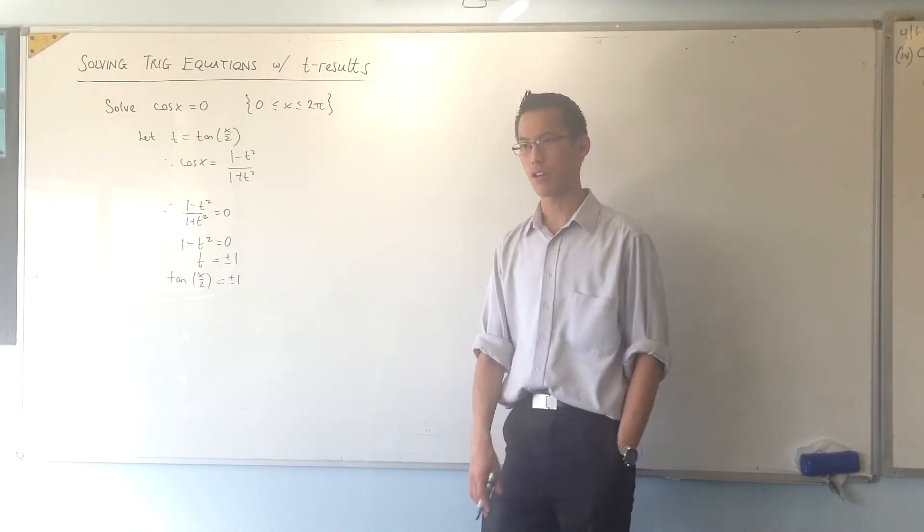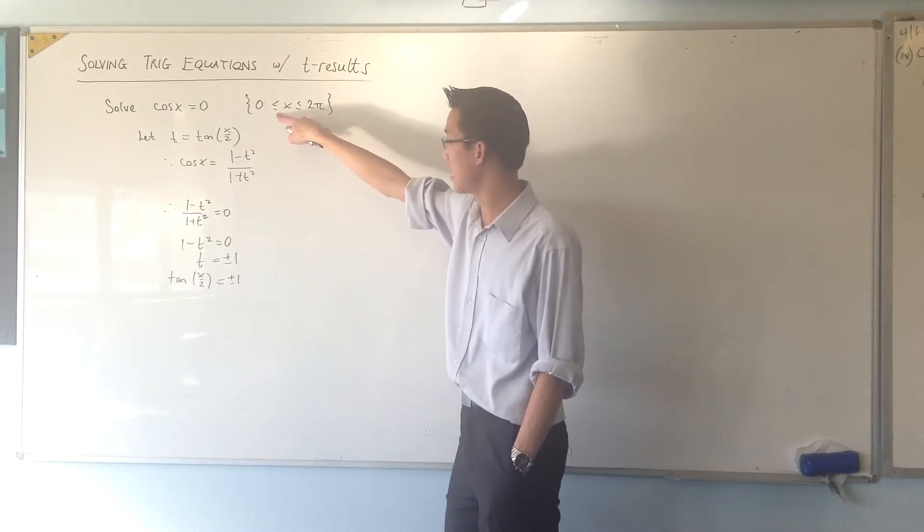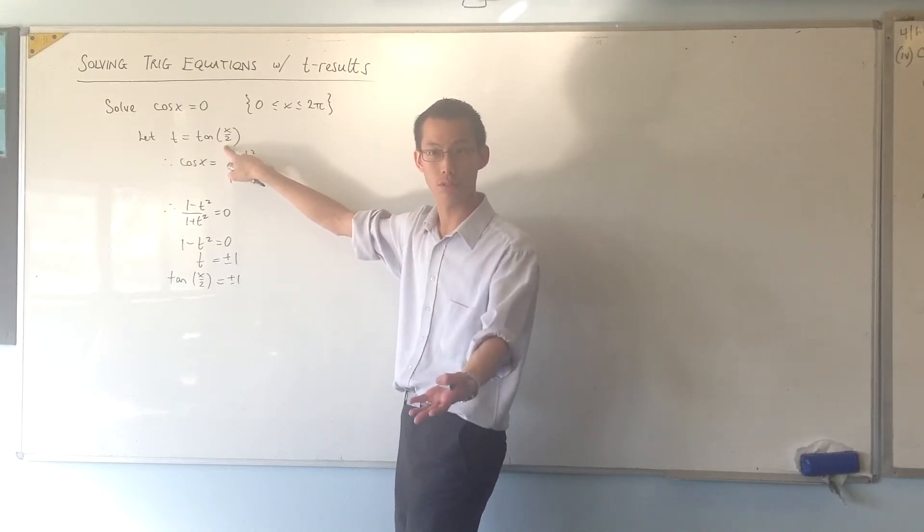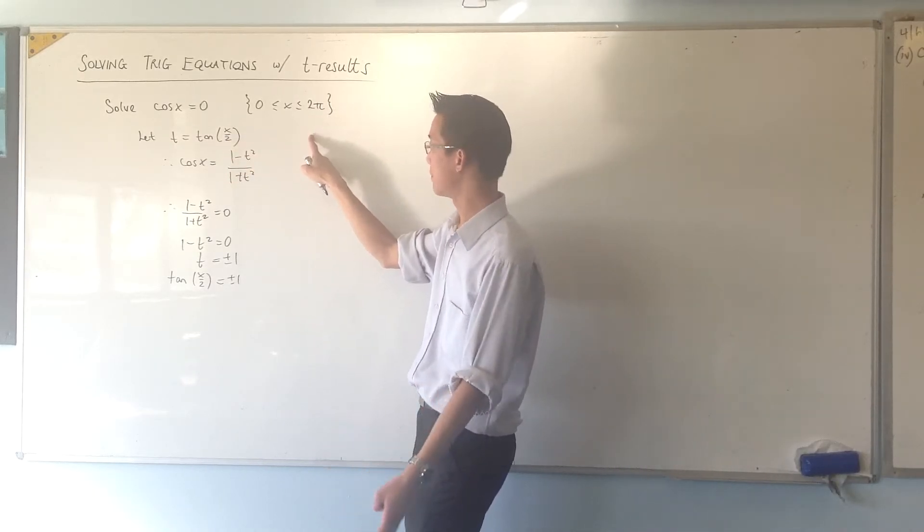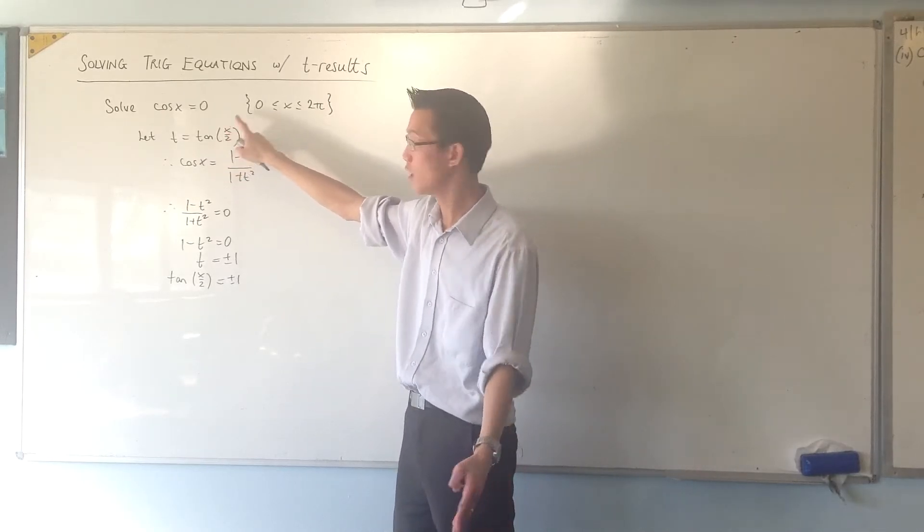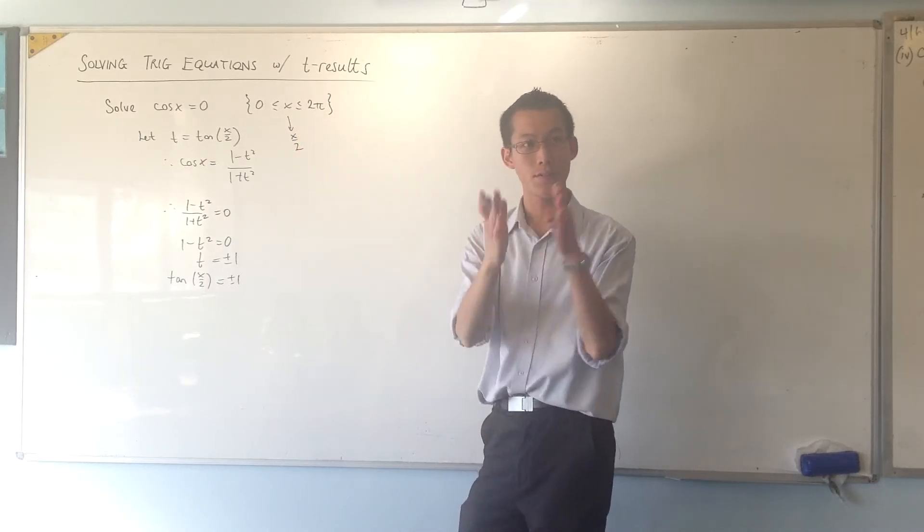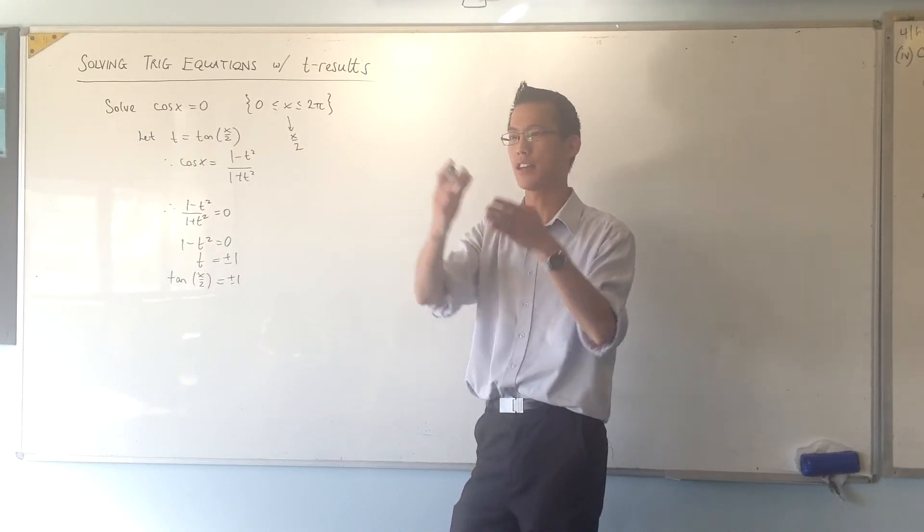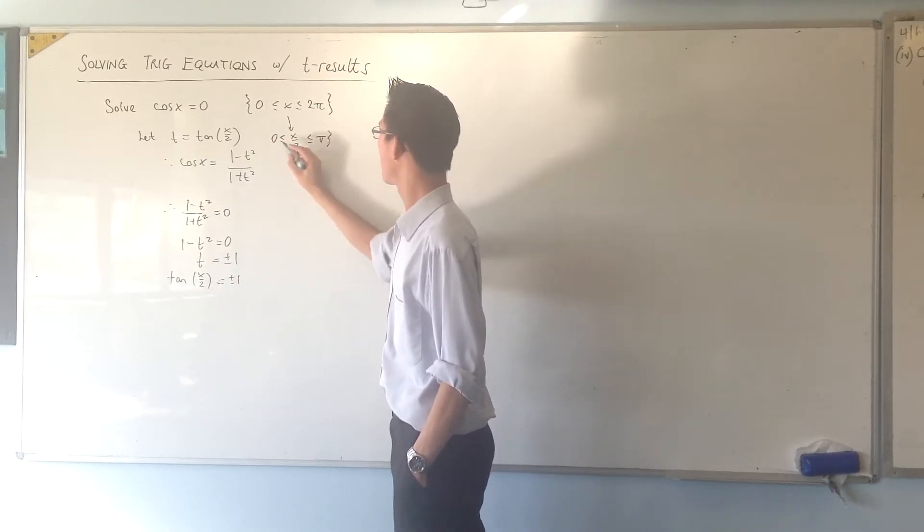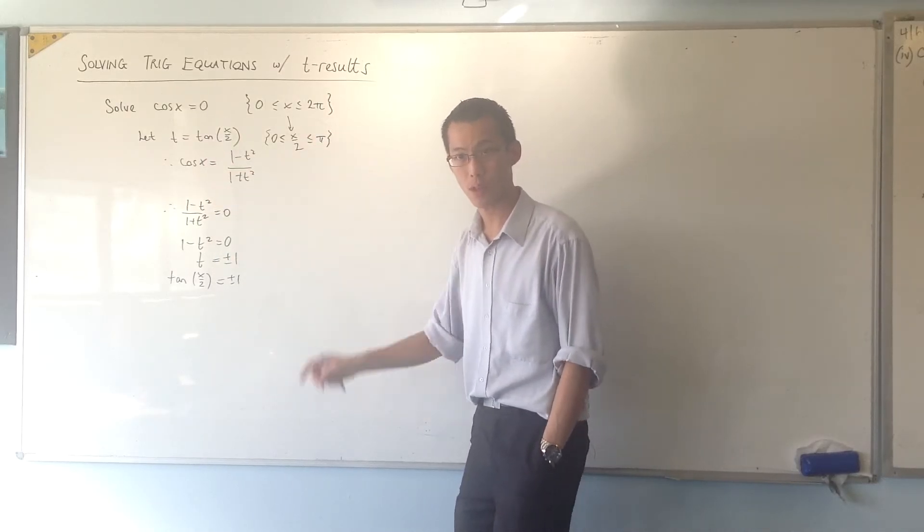I probably should have noted, by the way, I was a bit sloppy with this. Because I have noted this domain in the beginning, the second you turn into T's, you don't have x's anymore, you've got x on 2. So that's going to adjust your domain a little bit. If this is in x's, and I want to talk in terms of x on 2's, I'm going to take that, and I'm going to divide by 2. So seeing as I've divided that part of the inequality by 2, I divide every other part. So my new domain for these T results will be between 0 and pi.